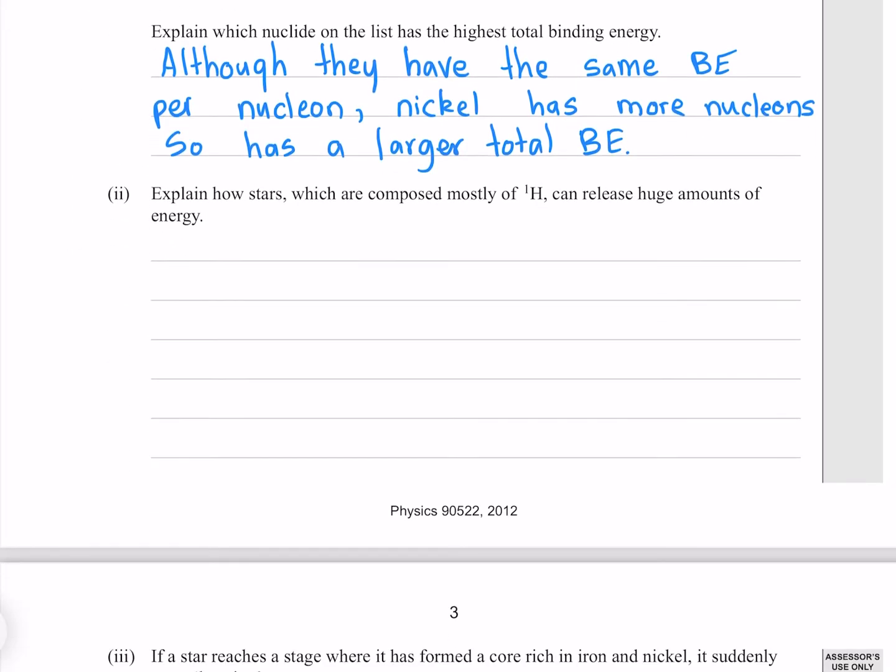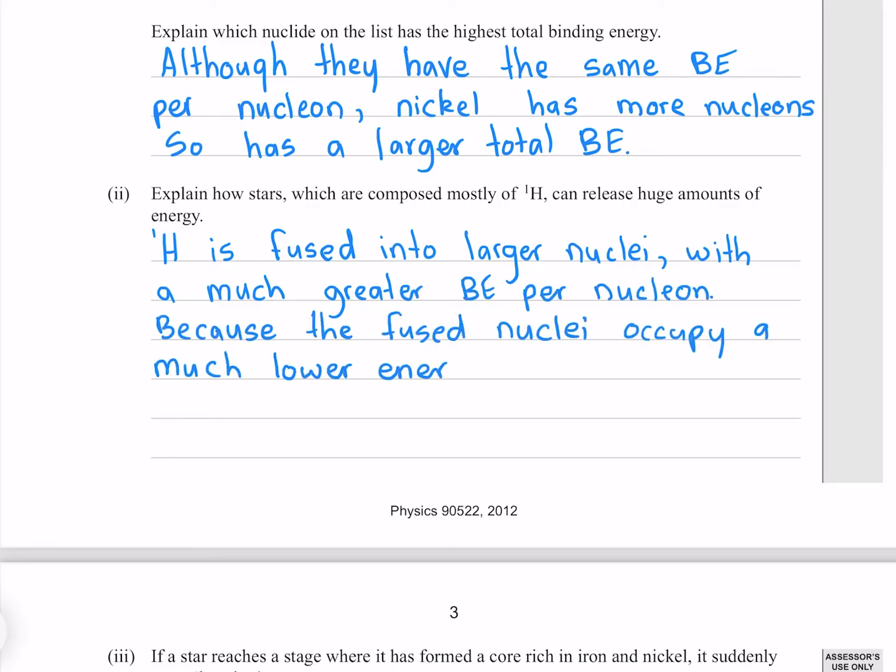Explain how stars, which are composed mostly of hydrogen, can release huge amounts of energy. Hydrogen is fused into larger nuclei with a much greater binding energy per nucleon. Because the fused nuclei occupy a much lower energy state, the excess energy is released.